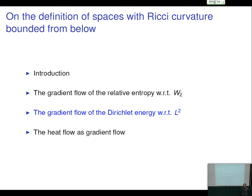On a metric measure setting we do not have a notion of distributional gradient, so we might be in trouble defining the energy. But in fact we are not — it has been known for at least 15 years how to define Sobolev functions on a metric measure space. The basic idea is that if you want to define a function in W^{1,2}, you don't need to know the distributional gradient; it is sufficient to know its modulus.